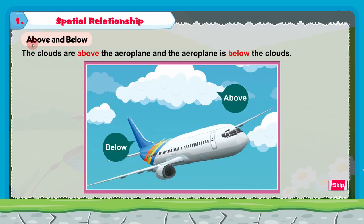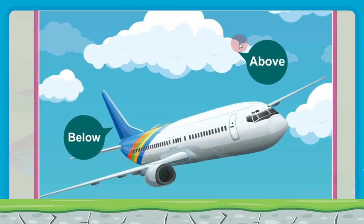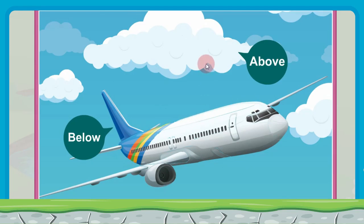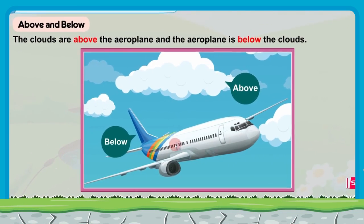Children, the next topic is above and below. In this picture you can see an aeroplane, clouds, and the sky. The clouds are above the aeroplane — A-B-O-V-E above — and the aeroplane is below the clouds — B-E-L-O-W below. The aeroplane is below the clouds and the clouds are above the aeroplane.